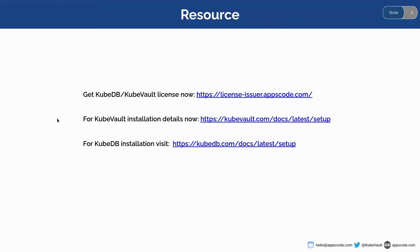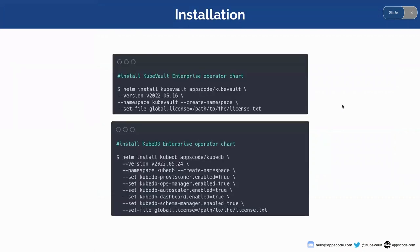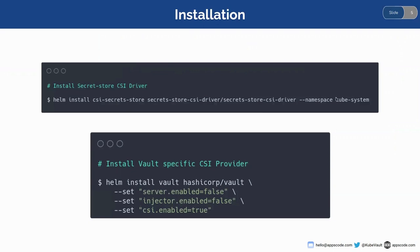Before starting, here is our list of resources. You can get KubeVault or a KubeVault license, and the installation process links are given here. For installing the KubeVault or KubeVault enterprise operator chart, you can follow the set of instructions provided. Our slides will be publicly available after the webinar. I'll be using our Secret Store CSI driver, which works seamlessly with our KubeVault operator.